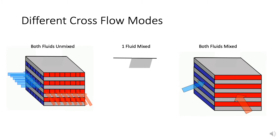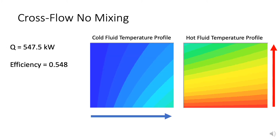We'll examine the simulation results for the no-mix cross-flow heat exchanger. We have two temperature profiles — one for the cold and one for the hot fluid. The cold fluid is moving left to right in the system, while the hot fluid moves from bottom to top. Each temperature gradient relies on two directions of travel with a dominant direction against the grain of the other fluid. Because the cold fluid is unable to mix with itself, we see vertical differences in temperature; similarly for the hot fluid, we see horizontal differences. The heat exchange of the system is 547.5 kilowatts, and the efficiency is 0.548.